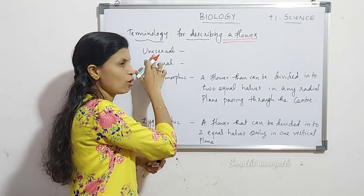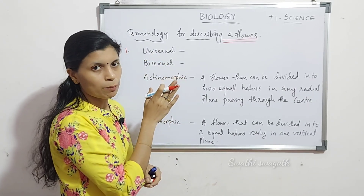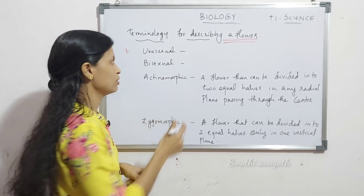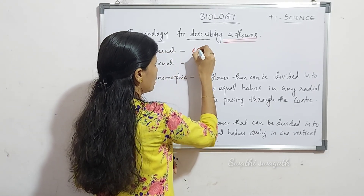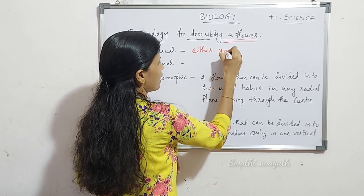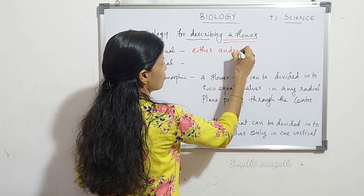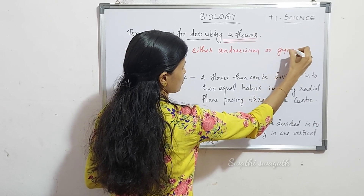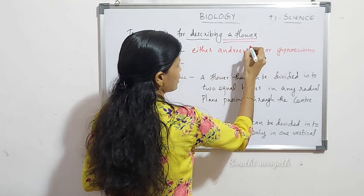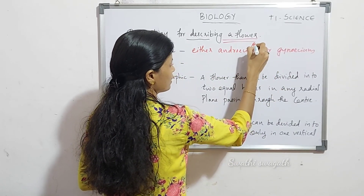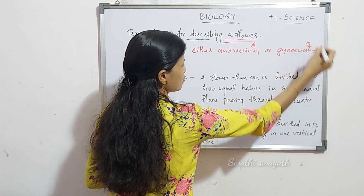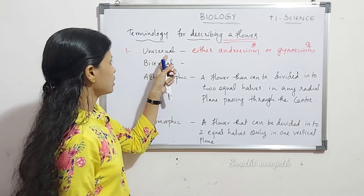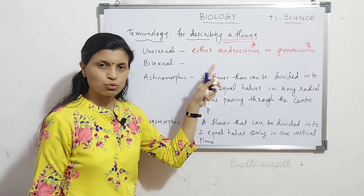Either the male or female part is present in a flower — then we call it a unisexual flower. It is a flower with either androecium or gynoecium. Androecium means a male reproductive part and gynoecium means female reproductive part. Such flowers are called unisexual flowers.